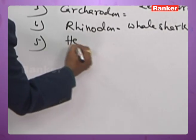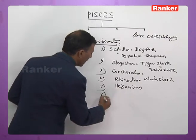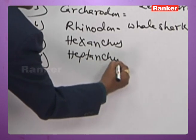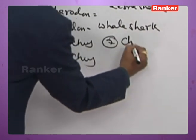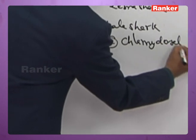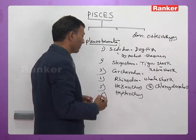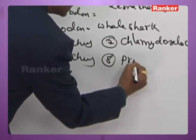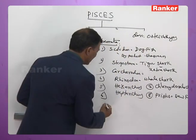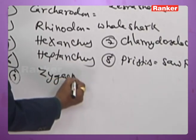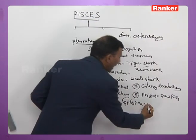Heptanchus is a shark with seven pairs of gills. Chlamydoselachus is the only shark with an operculum. Pristis is the sawfish. Sphyrna (also called Zygaena) is commonly called the hammerhead shark. All these belong to Pleurotremata.